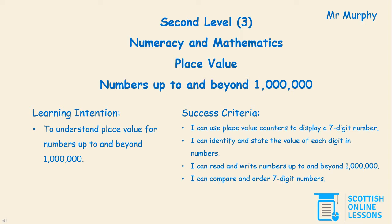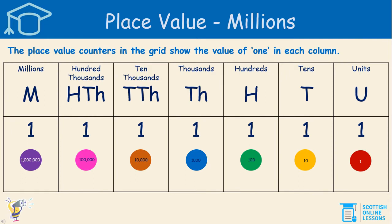Hello, it's Mr. Murphy here from Scottish Online Lessons. This maths lesson today is place value and we're going to look at numbers up to and beyond 1 million. Having a good understanding of place value is really important as it helps us in lots of other aspects of maths, like addition and subtraction for example and many more. So let's take a look at the grid.